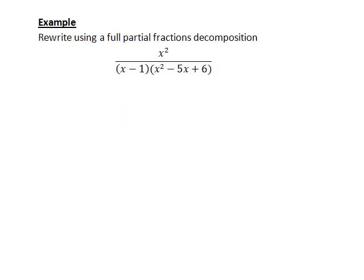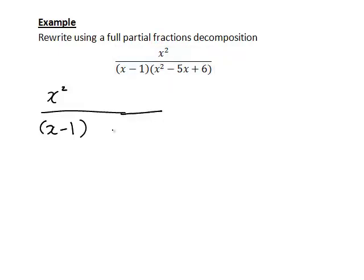Here we are given an expression x squared divided by (x minus 1) times (x squared minus 5x plus 6). We need to see whether this has been factorised as much as it can be. Clearly x minus 1 is a linear factor, but the quadratic factor x squared minus 5x plus 6 — can we break that down any further?